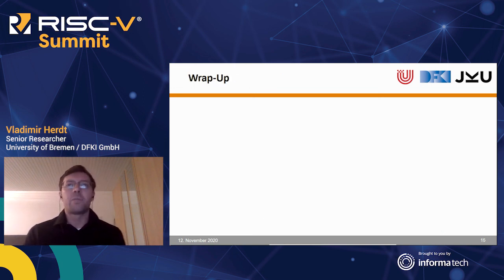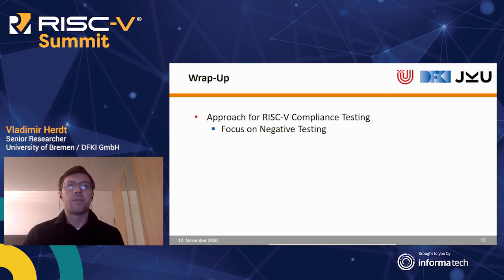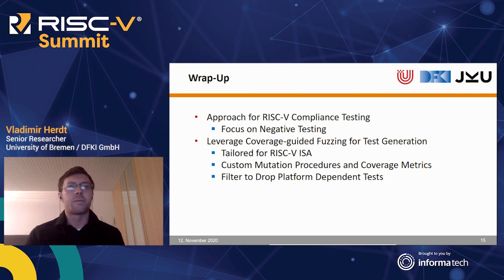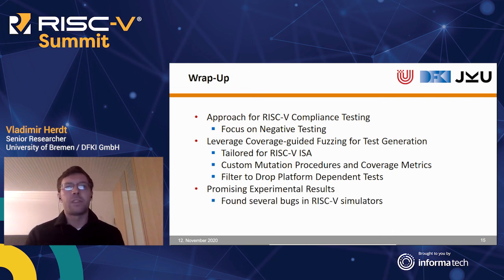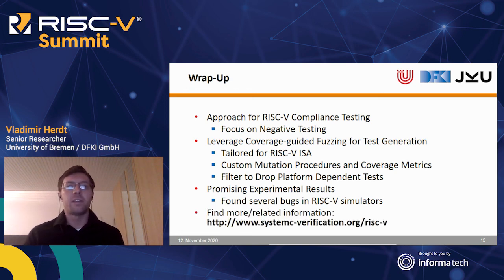In summary, I have presented our approach for RISC-V compliance testing that puts a strong emphasis on negative testing to complement existing compliance testing solutions. We leverage coverage-guided fuzzing techniques tailored for the RISC-V ISA, integrating custom mutation operations and coverage metrics to guide the test generation process more effectively. A special filter is integrated to avoid generation of platform-dependent test cases that depend on hard-coded memory access addresses or jump targets. We obtained very promising experimental results in finding bugs in several RISC-V simulators. More information and recent updates can be found at systemc-verification.org/RISC-V.